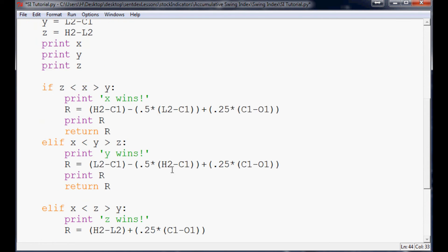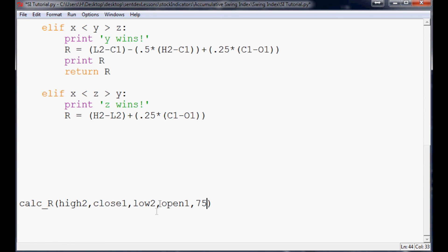Just make sure. H2, C1, L2, O1. H2, C1, L2, O1, 75. So, calc R. So we could say, literally, R equals calc R. And then print R. So in this case, we should get the returned value of R. And we need to go ahead and finish up this part. Print R. I don't know where my mind is today. Okay. Return R. And cool.